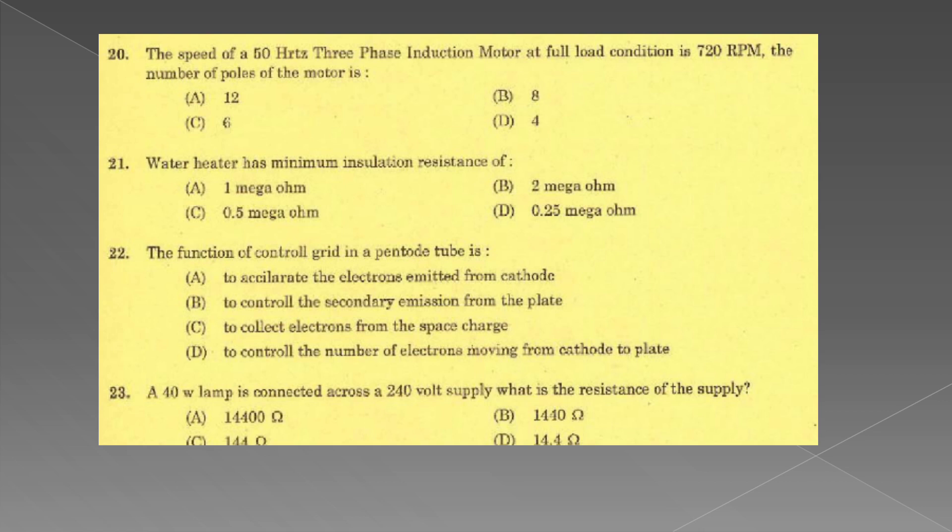The speed of a 50 Hz three-phase induction motor at full load condition is 720 rpm. The number of poles of the motor: N equals 120 F by P. This is the value of 8. Water heater has minimum insulation resistance of 1 mega ohm. The function of control grid in a pentode tube is to control the number of electrons moving from cathode to plate.